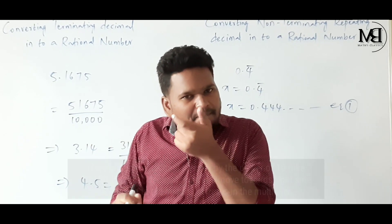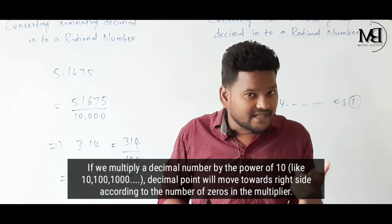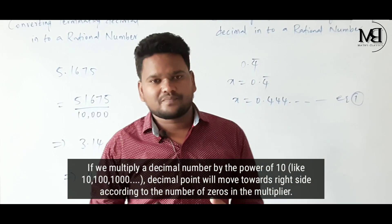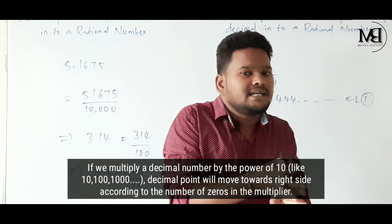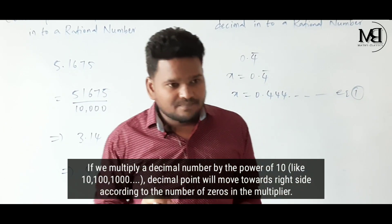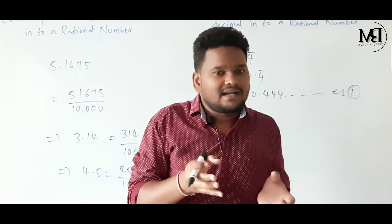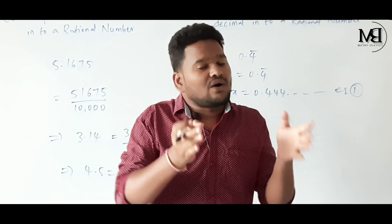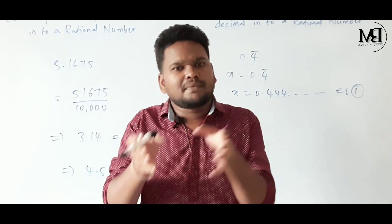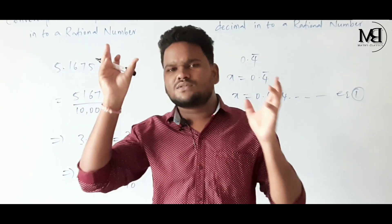When we multiply a decimal number by a power of 10, the decimal point moves towards the right side according to the number of zeros in the multiplier. If we multiply by 10, it moves one step; by 100, two steps; by 1000, three steps. Similarly, if we divide by a power of 10, the decimal point moves towards the left.